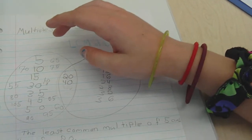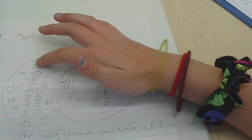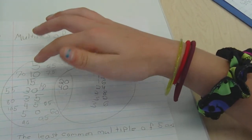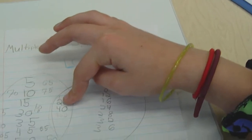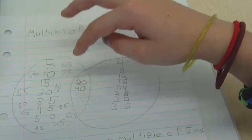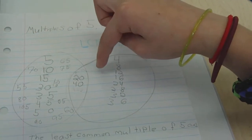Multiples of 5 are 5, 10, 15, 20, which is in the middle because 20 is a multiple of 4 and 5. Wonderful.